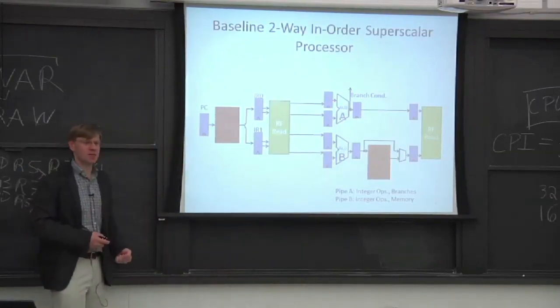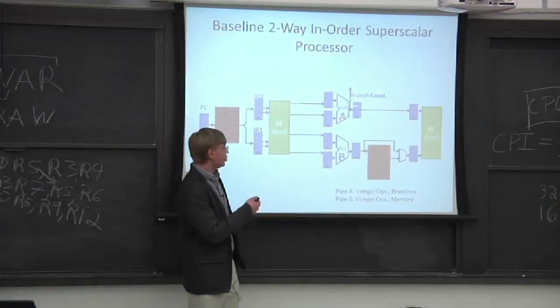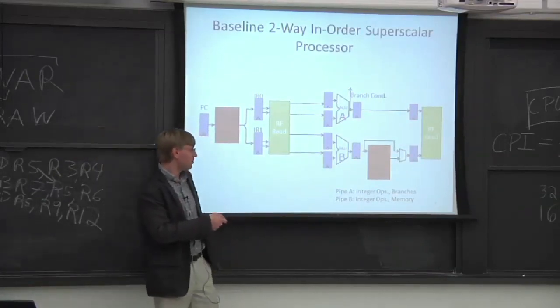We can execute two integer ops at the same time in this pipe. Drawn here, we're going to actually differentiate these two pipes. We're going to call this pipeline A and this pipeline B.